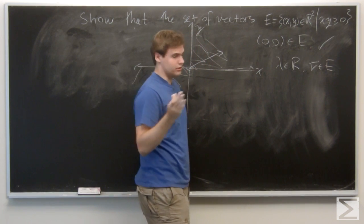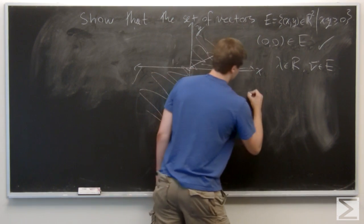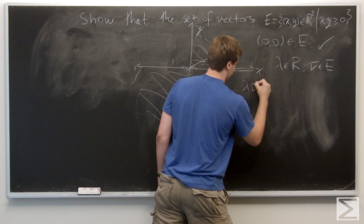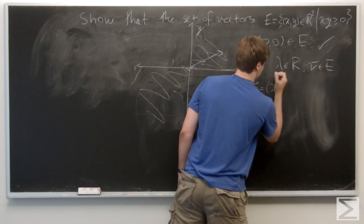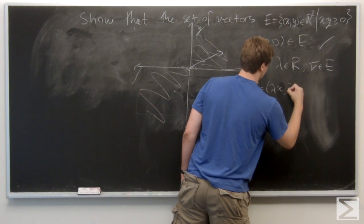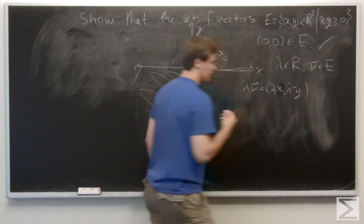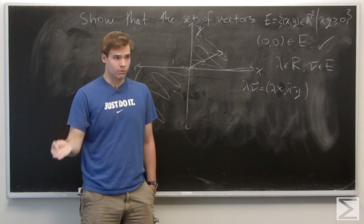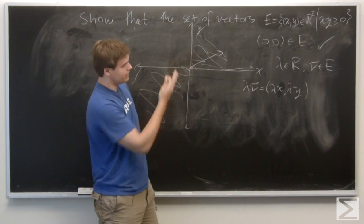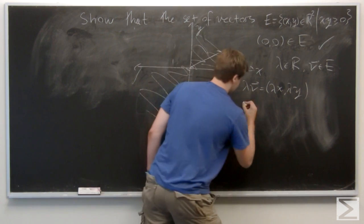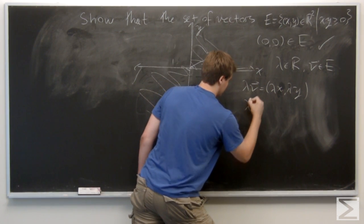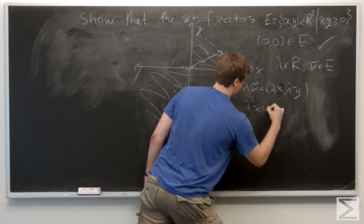So then the scalar multiplication of lambda and V is, in coordinates, lambda x comma lambda y. We want to show that this lies in E. So what we do is we test to see if it does. We multiply the two coordinates together. So this is going to equal lambda squared times xy.